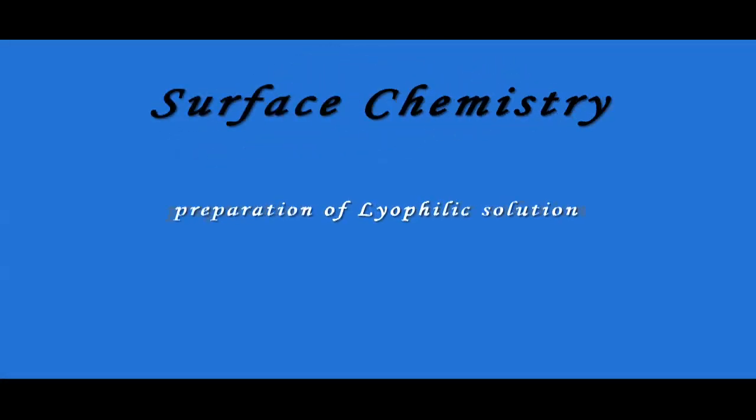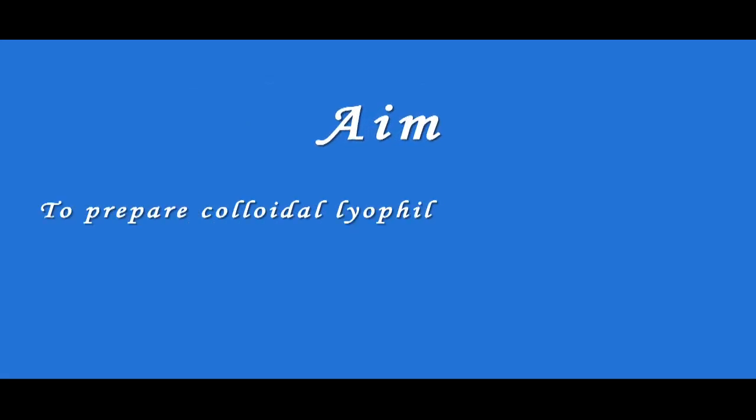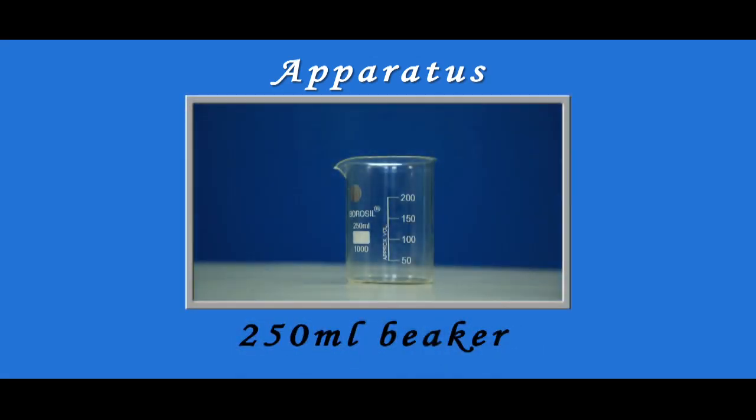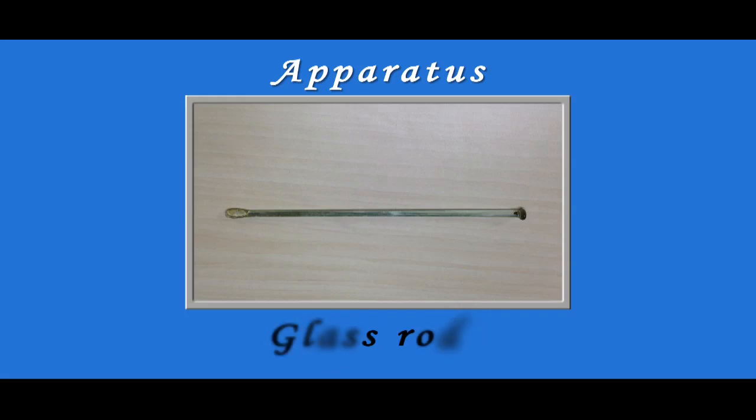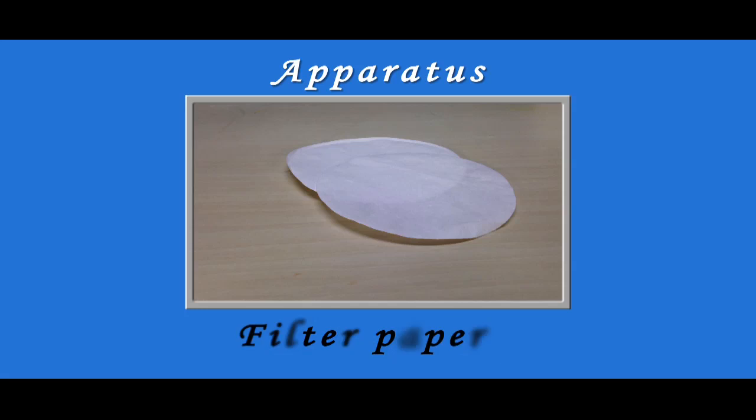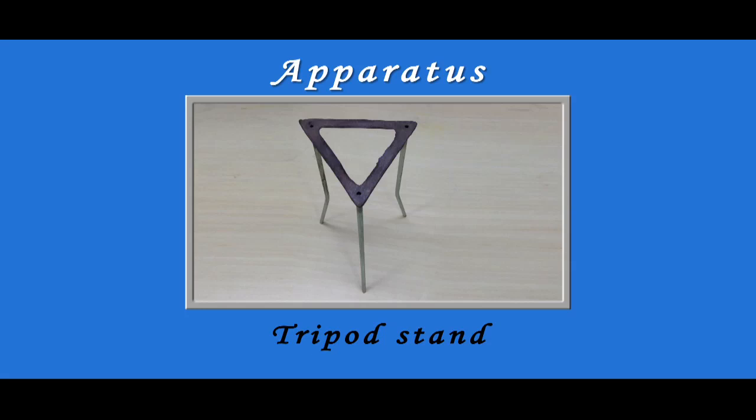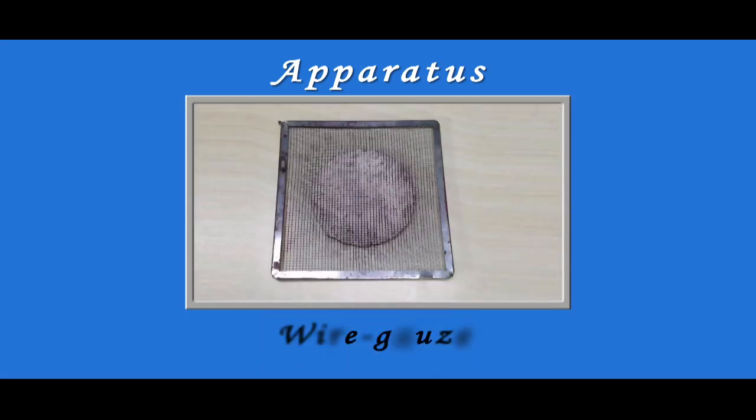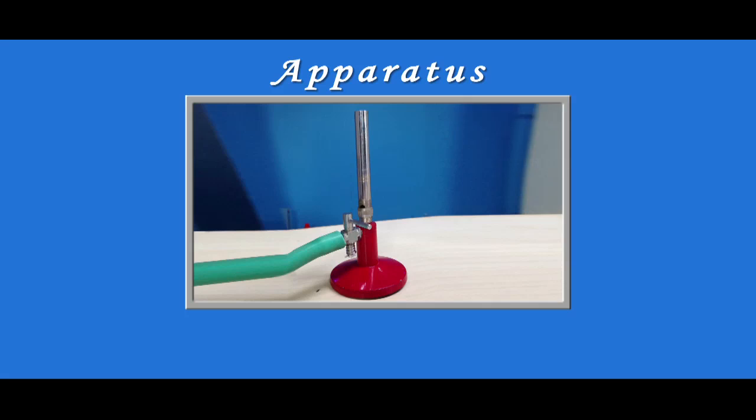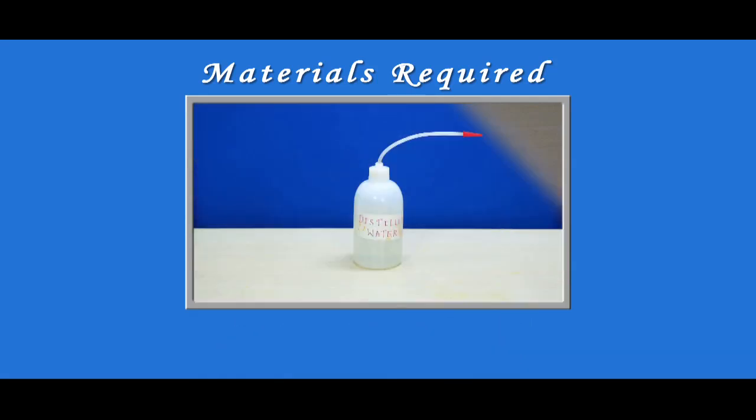Surface chemistry: preparation of lyophilic solution. Aim: to prepare colloidal lyophilic solution of starch. Apparatus required: 250ml beaker, glass rod, funnel, filter paper, pestle and mortar, tripod stand, wire gauze, and burner. Materials required: soluble starch and distilled water.